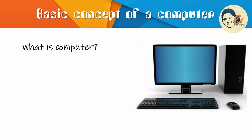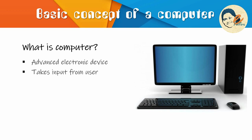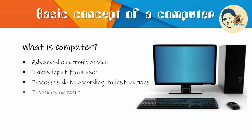Let's first discuss what is a computer. In a single sentence, the device used to compute something is a computer. A computer is an advanced electronic device that takes input from the user as data, then processes this data according to instructions given to it in a variable software or hardware program, and produces result, i.e. output. Computers can also store data for future use in appropriate storage devices and retrieve it whenever necessary.